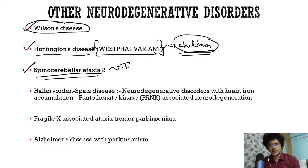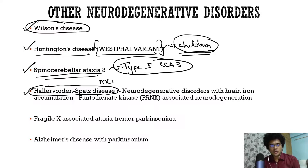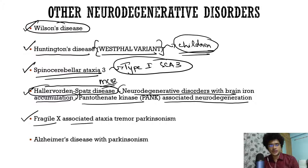SCA-3 type 1 is going to have Parkinson's-like features. Then Halervorden-Spatz disease — now known as pantothenate kinase-associated neurodegeneration — is important for MCQs. It comes under neurodegenerative disorders with brain iron accumulation. Other causes include fragile X-associated ataxia tremor parkinsonism and Halervorden-Spatz disease with parkinsonism.